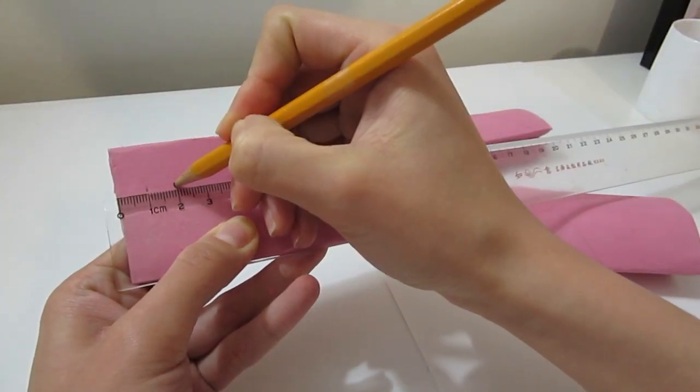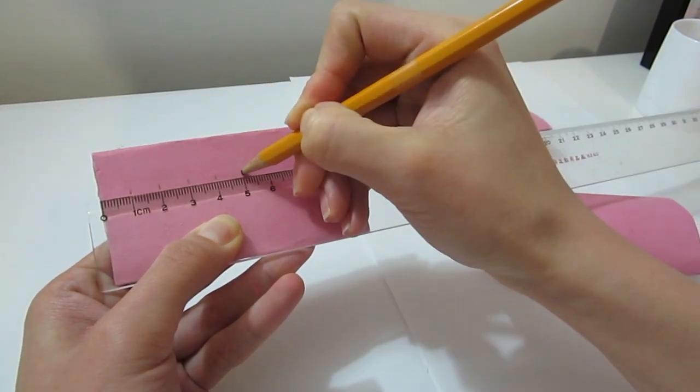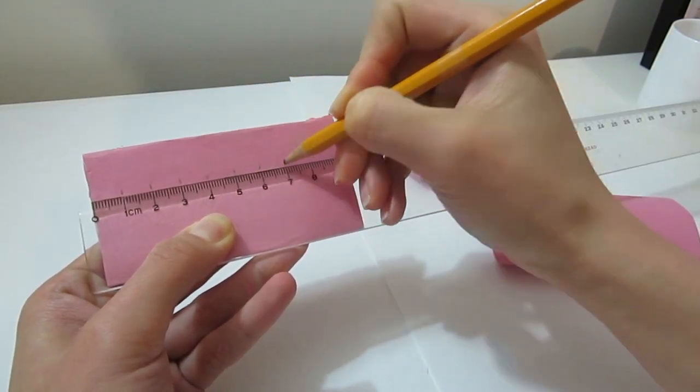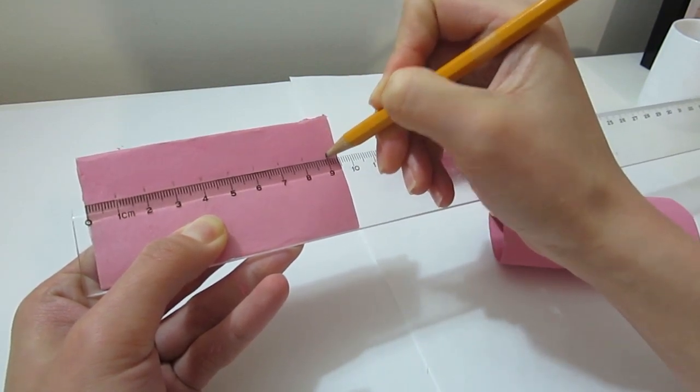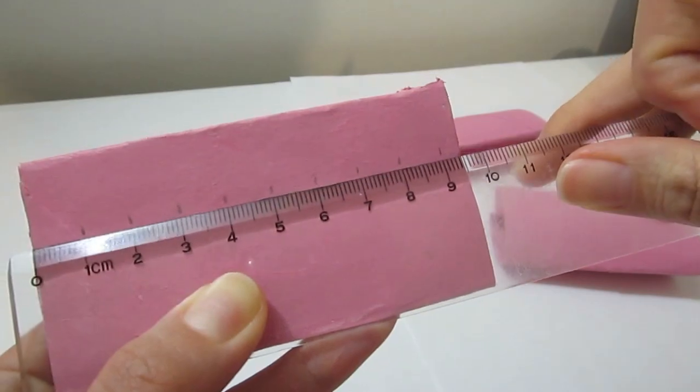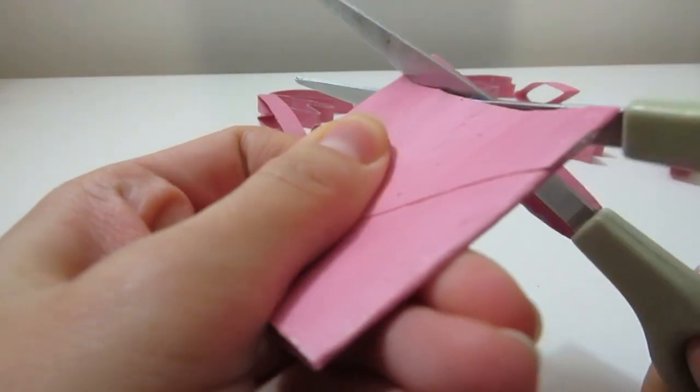I made a mark at every centimeter point and that's how thick the flower petal is going to be. You can of course make yours however wide you want it. And when you cut out each strip, you will have a flower petal.